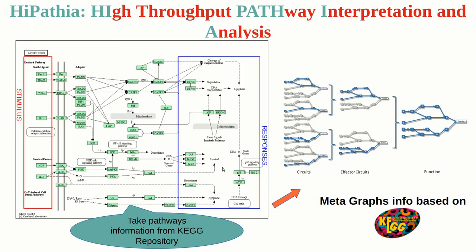I will explain how the Hypathia method works. Hypathia is the abbreviation of High-Throughput Pathway Interpretation and Analysis. It is a mechanistic cell activity modeling algorithm that deals with activity flow graphs stored as a metagraph object preloaded into our web tool. This metagraph object by default uses pathways from the KEGG database, but recently we updated it to include more resources. Hypathia treats the graphs as if they were composed of electrical circuits, where each circuit is equal to each receptor-effector sub-pathway.